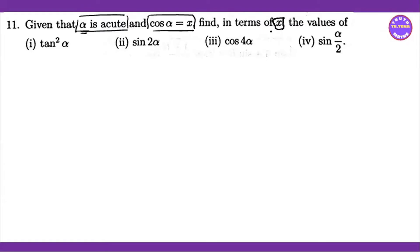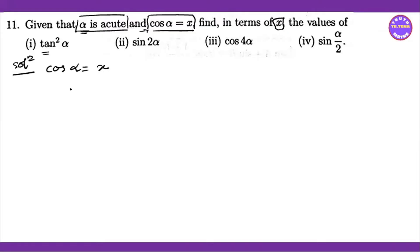The values of x. If cos alpha equals x, then cos squared alpha is x squared, and sin squared alpha is going to be one minus cos squared alpha.